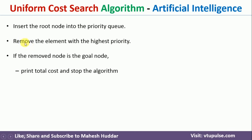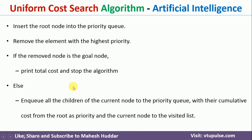Whatever node we have removed, we need to check whether it is a goal node or not. If it is a goal node, we stop the algorithm and print the total cost. Otherwise, we add all the children of the current node to the priority queue with their cumulative cost from the root node as the priority, and then we mark the current node as visited.